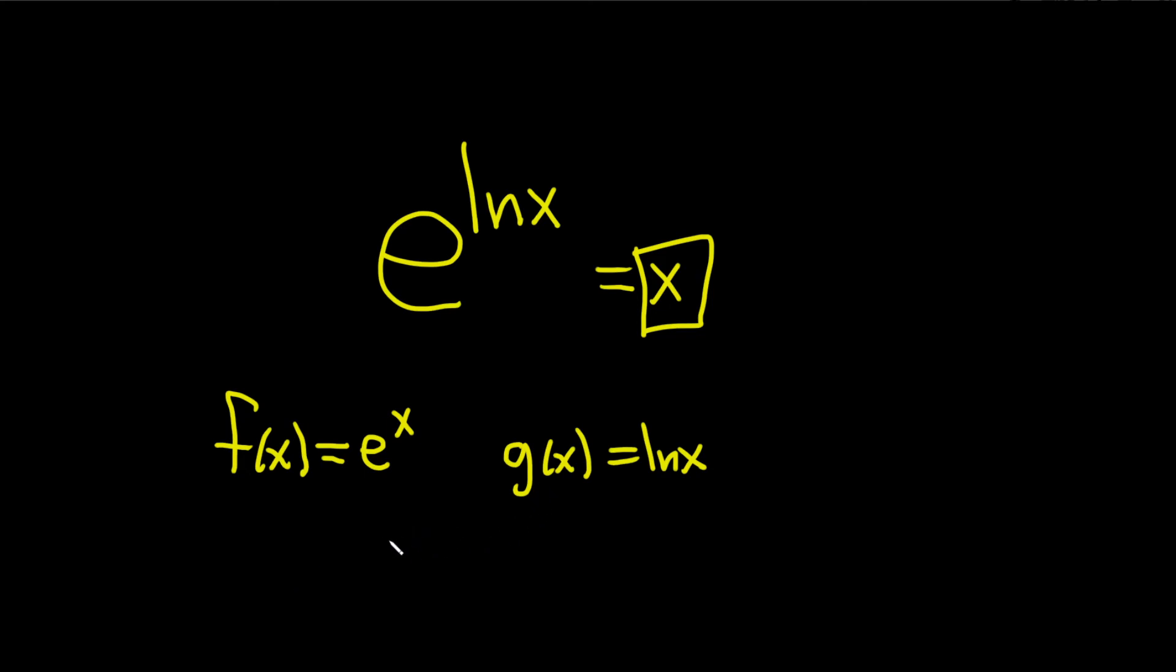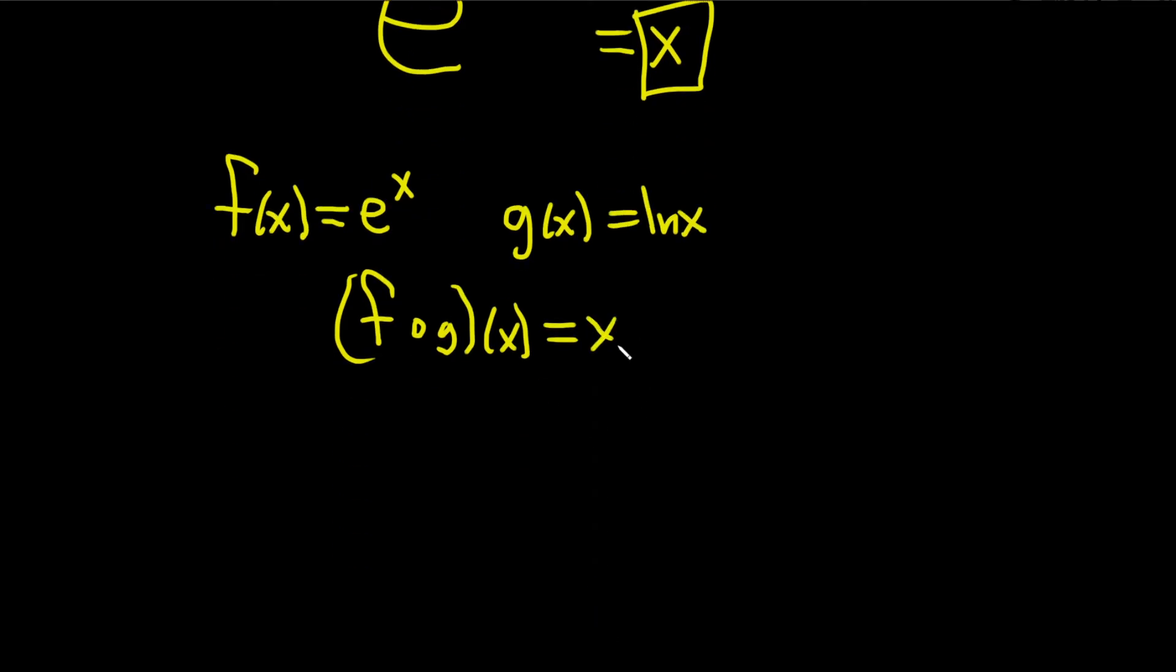So if you take the composition f∘g of x, because they're inverse functions, you get x. Well, what is this? f∘g of x is the same thing as f of g of x, just like that. And that's equal to x.